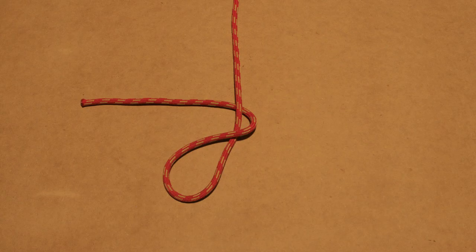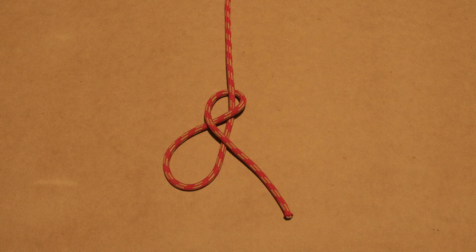All right, here we go again step by step. We start by forming a loop. Now take the working end and go underneath the standing part to form an elbow. Make sure to have enough working end to complete the knot.